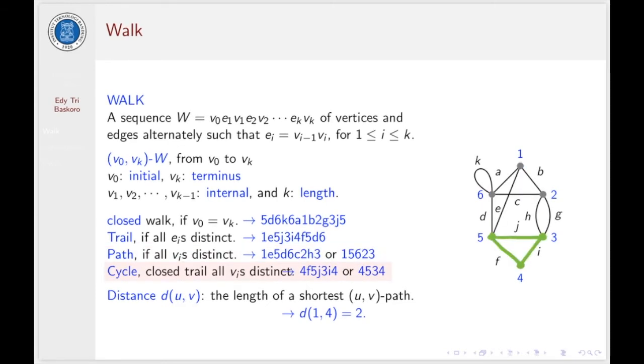We call W a cycle if this walk is a closed trail. That means all vertices are distinct, and also edges are distinct. This is one of the examples. We have a cycle of length 3.